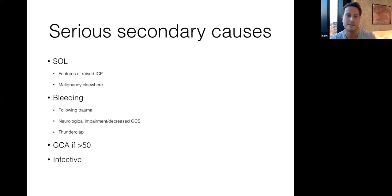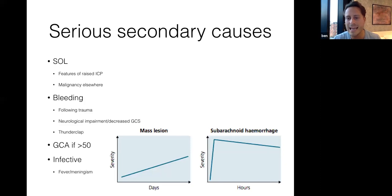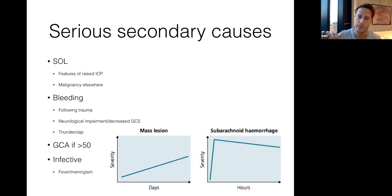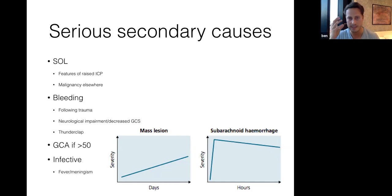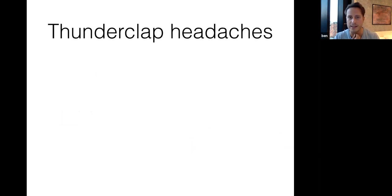Looking at how pain levels change: if someone has a mass lesion, the headache is slowly getting worse over days. If someone has had a subarachnoid hemorrhage, there will be absolutely no pain and then suddenly they are in severe agony. The pain usually abates a little but does not go away. So let's talk about thunderclap headaches. Thunderclap headache is the phrase for a sudden onset headache where the patient classically says they were completely pain free, then all of a sudden in agony — as if someone had hit them on the back of the head.